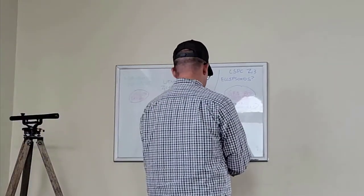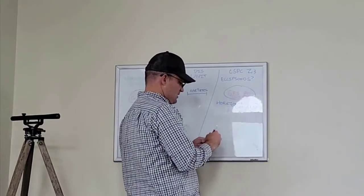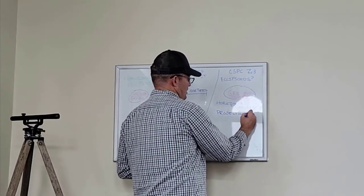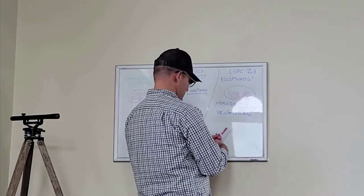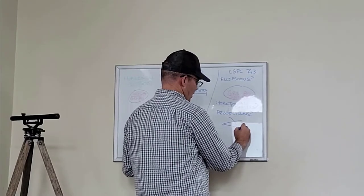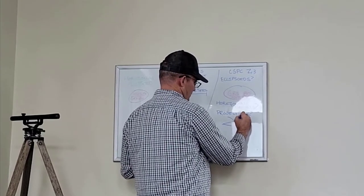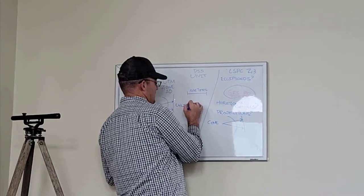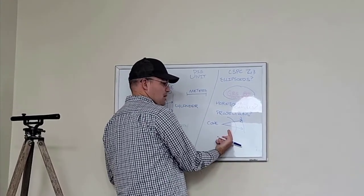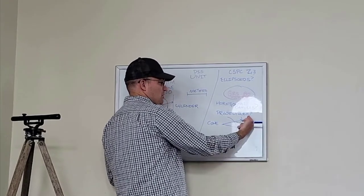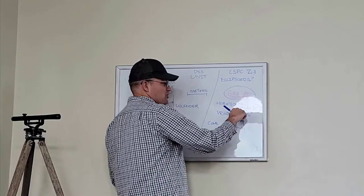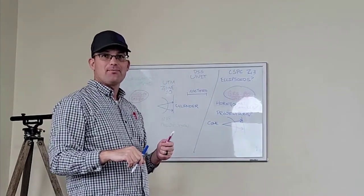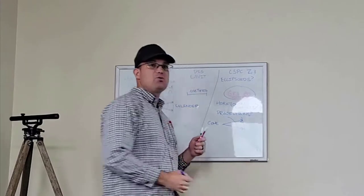The next thing QGIS needs to know is: are the projections the same? State Plane uses what they call a Lambert Conic Conformal — it's just a cone. UTM uses a Transverse Mercator — a cylinder. So the projections are not the same. After it changes the latitude-longitude values from WGS-84 to GRS-80, it then has to change the projection.